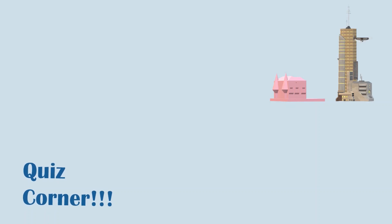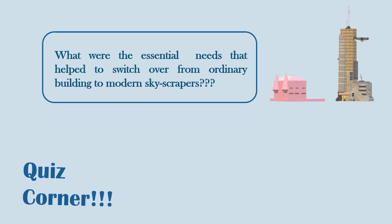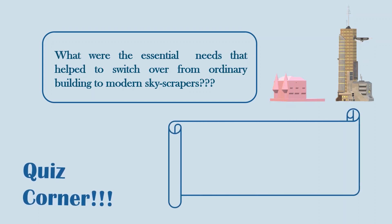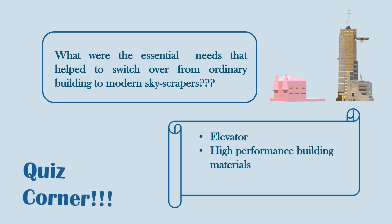Here is our questionnaire. In olden days, we had only 3 or 4 storey buildings. Now, 10 to 15 storey buildings are quite common in the city. Can you tell me what are the essential needs that helped to switch over from ordinary buildings to modern skyscrapers? Pause the video and type your answers in the comment box. The first and foremost thing is the elevator — who will occupy the 10th floor of a commercial complex if it has no elevator? The next one is high-performance building materials to carry such massive and heavy loads. Last but not least is deep foundations.